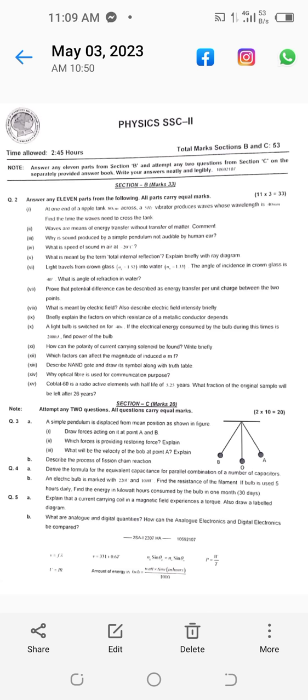Explain that a current carrying coil in a magnetic field experiences a torque. Also draw a labeled diagram. Part B: What are analog and digital quantities? How can the analog electronics and digital electronics be compared? And last are the formulae given.